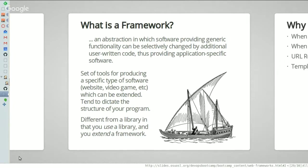Similarly, frameworks — Wikipedia describes it as an abstraction in which software providing generic functionality can be selectively changed by additional user-written code, thus providing application-specific software. That's very heady. Essentially I make it akin to like a vehicle or a boat, as the picture says. Whereas a library is sort of like a set of tools like screwdrivers and hammers, a framework is sort of like a very basic outline for a thing and then you get to fill in the outline — like paint by number or something like that.